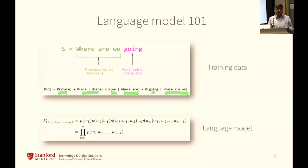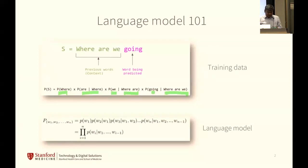Massive — as in billions of parameters. Rumor has it GPT-4 is a trillion parameters. They don't exactly tell us how many, so who knows. But that's what a language model is.